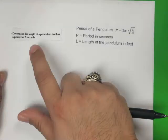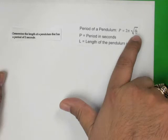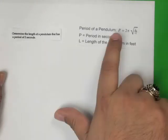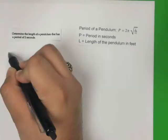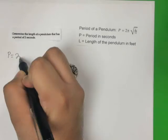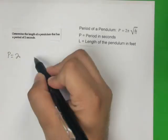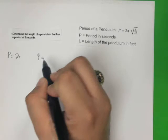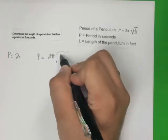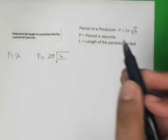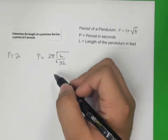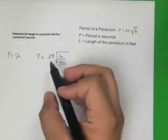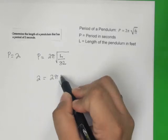Let's read the question one more time. Determine the length, so we're solving for L, of a pendulum that has a period of two seconds. We know P is two. Let's write down what we know. We know that P equals two, and we know the formula for the period: P equals two pi times the square root of the length of the pendulum in feet divided by 32. Let's set that up once more. Two equals two pi times the square root of L over 32.